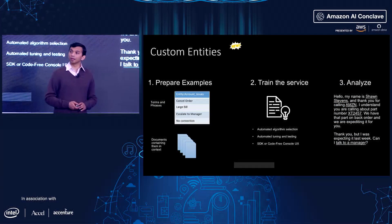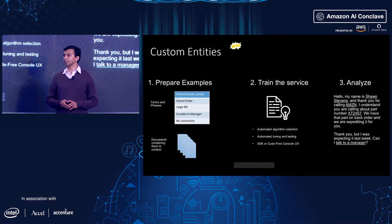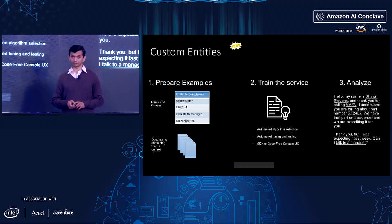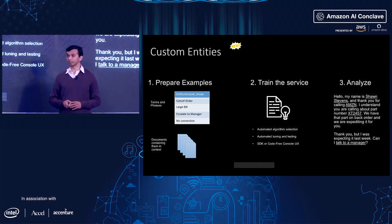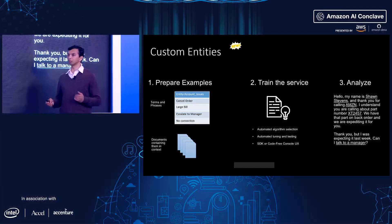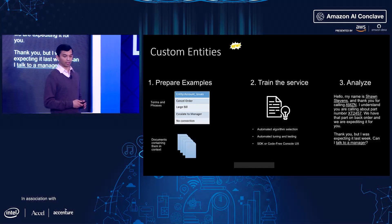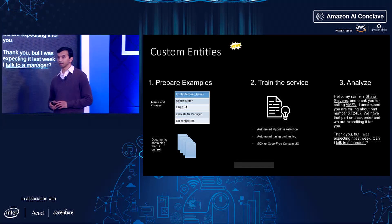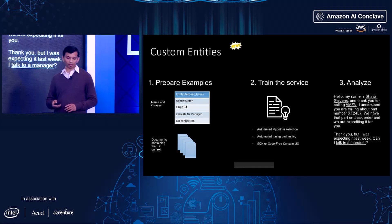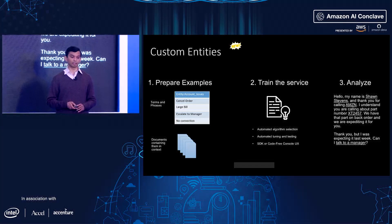The next new feature is custom entities. Today we extract names, locations, organizations, and brands. But let's say you're an insurance company and want to extract policy numbers, or a legal company wanting to extract case names or judge names — you can do that using custom entities. You give the types of entities you want to extract and documents containing those entities, and we learn from that. For example, if someone says 'I understand you're calling with a part number' — we don't extract part numbers by default, but because you trained the custom entity service, we can extract the part number. You can even detect small phrases like 'talk to a manager.'